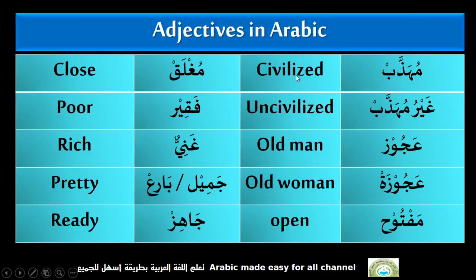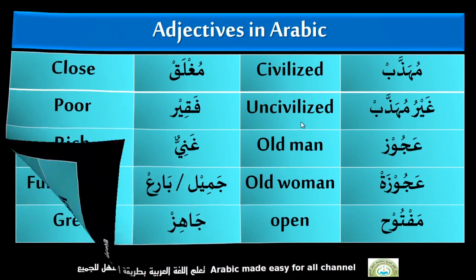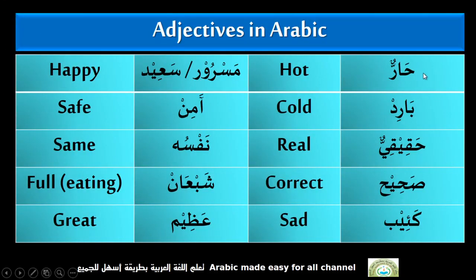Muhazab — Civilized. Qayr muhazab — Uncivilized. Ajoozun — Old Man. Ajoozatun — Old Woman. Maftoohun — Open. Mughla — Close. Faqir — Poor. Ghani — Rich. Jamil — Beautiful, Pretty. Jahiz — Ready. Hard — Hot. Barad — Cold. Haqiqiun — Real. Sahi — Correct.